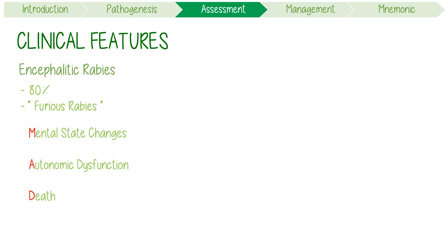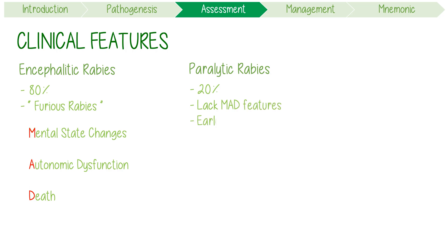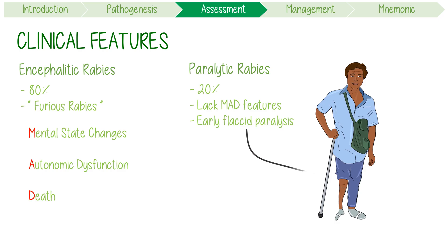On the other hand, paralytic rabies only occurs in 20% of patients. The cardinal features of classic encephalitic rabies are absent, because patients develop an early flaccid paralysis, often beginning around the area of the bite.